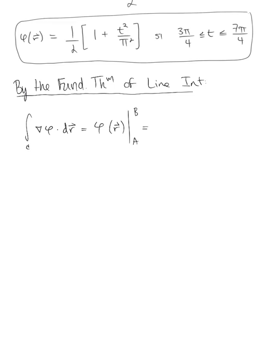So plugging what we just found in, we have one half multiplied by 1 plus t² over π², and we're now ready to evaluate from 3π over 4 to 7π over 4.